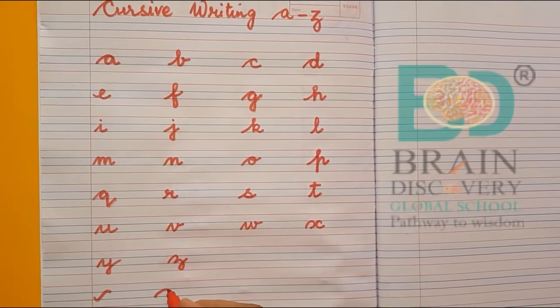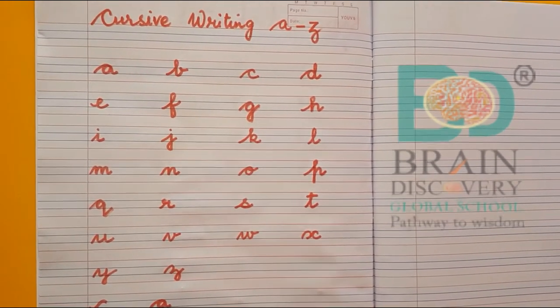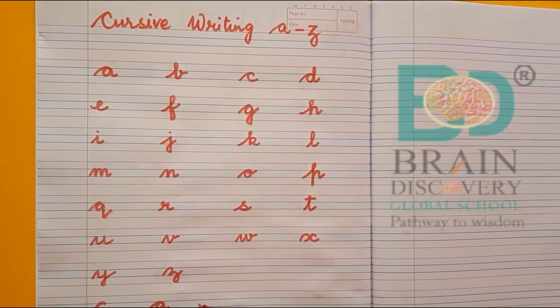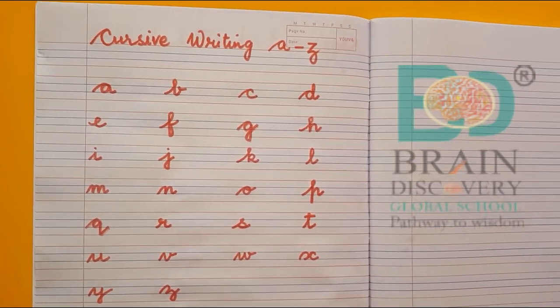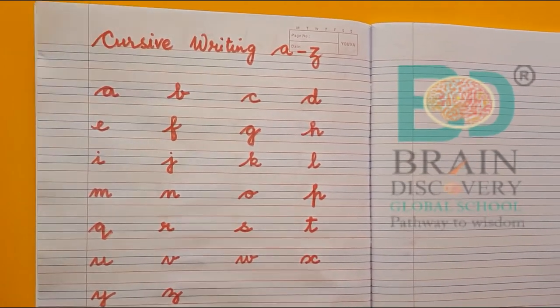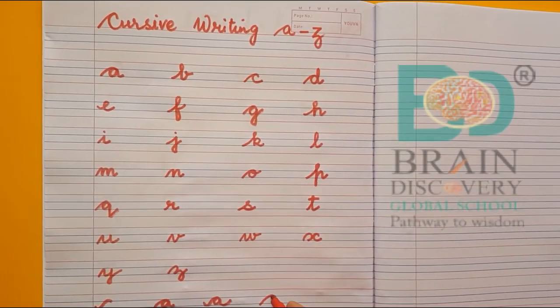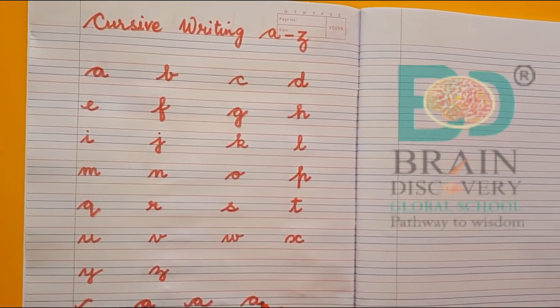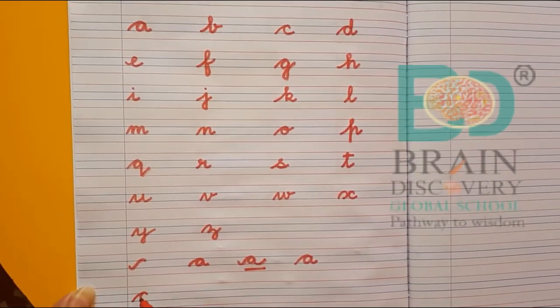And writing a, similarly please do not make it this way and this way, it is not the right way. Simple, go up, come down, and this, this is e. So remember the strokes.